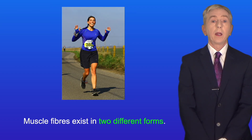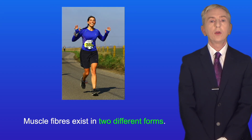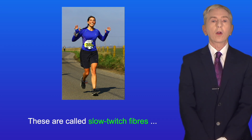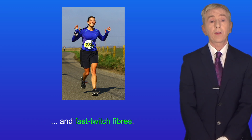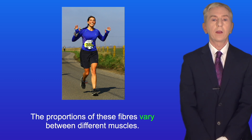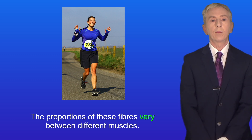Muscle fibers exist in two different forms: slow twitch fibers and fast twitch fibers. The proportions of these fibers vary between different muscles.